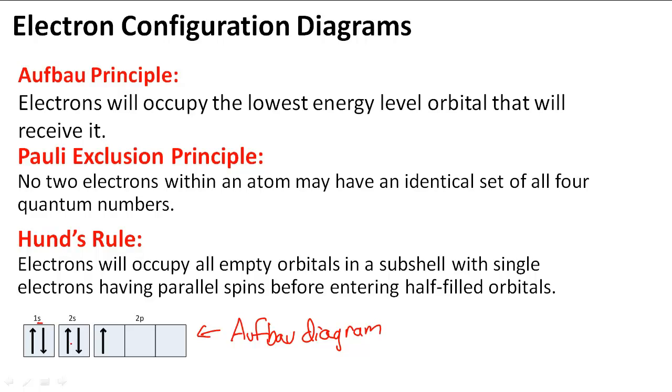So 1s, then 2s, then 2p, and you can follow the order so that you can find out exactly where that electron is going to go. Basically, lowest to highest energy.